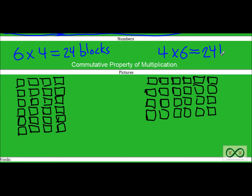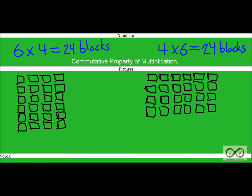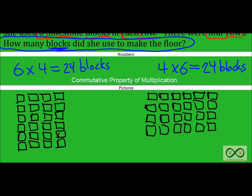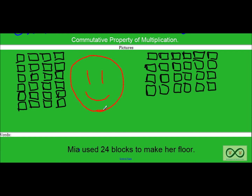Our next step is to make sure we solved our math job: How many blocks did she use to make the floor? We had six groups of four or four groups of six — no matter how you arrange it, the product is the same. We've got factors of six and four; when you multiply them together you get twenty-four. Mia used twenty-four blocks to make her floor. Once again, we used numbers, pictures, and words to make a well-rounded answer. And look at that — a happy student!